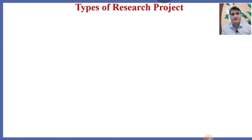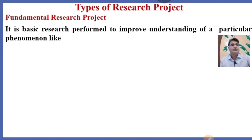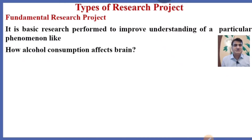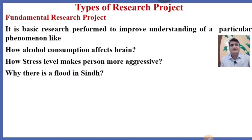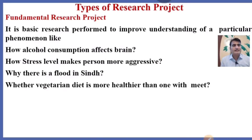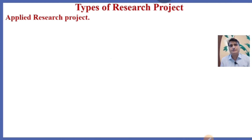There are two basic types of research projects. The first is the fundamental research project, which is basic research performed to improve the understanding of a particular phenomenon — like how alcohol consumption affects the brain, how stress levels make a person more aggressive, why there is Fillard-in syndrome, and whether a vegetarian diet is healthier than one with meat. Fundamental research results are published and shared with the scientific community.